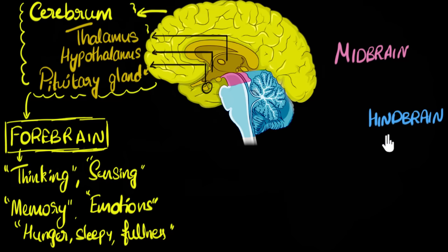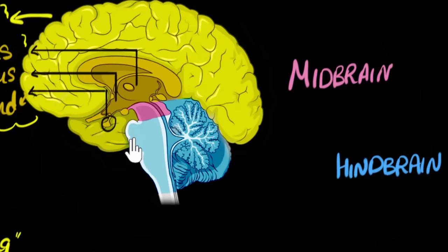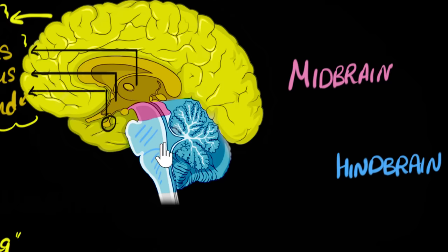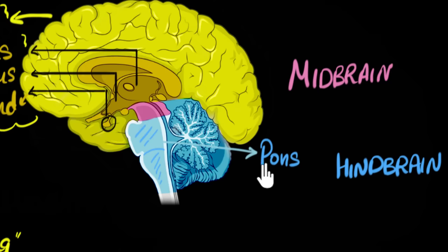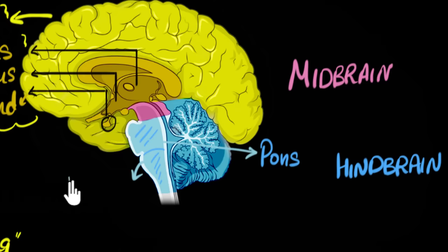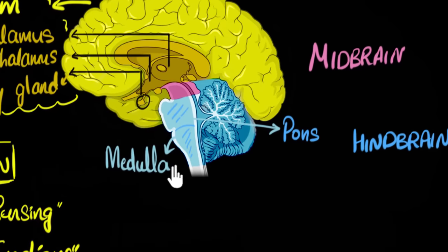We're not going to look at the parts of the midbrain — it's a tiny section — so let's jump directly to the hindbrain. Looking at the brain stem in the blue section, you can see two distinct regions. One region, one lump over here, is called pons. It's a Latin word meaning 'bridge,' as it bridges between the midbrain and the bottom part. That brings us to the bottom part, which is pretty important: it's called the medulla oblongata.